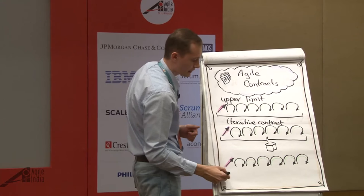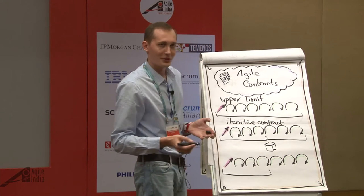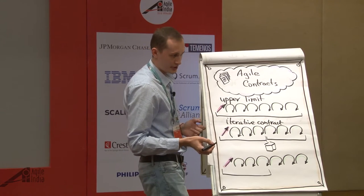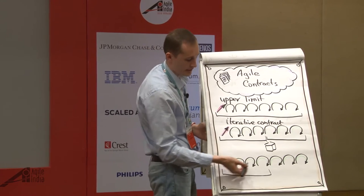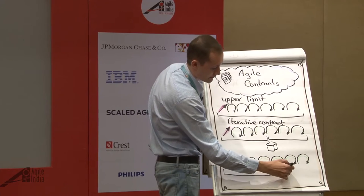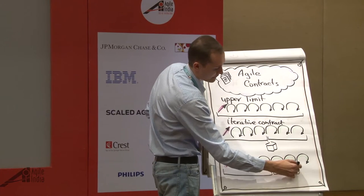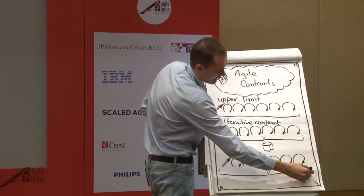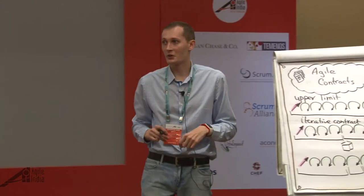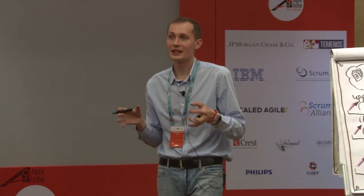Or you can do an extreme example of iterative contracts — after three sprints, just contract for one sprint at a time. Some organizations have one-sprint-length contracts. We build something iteratively, so why shouldn't we have an iterative contract for that?